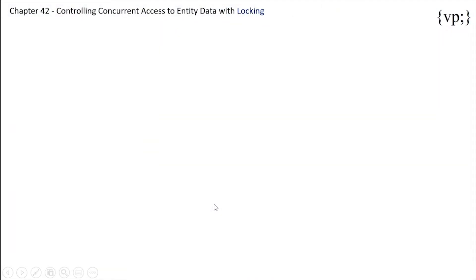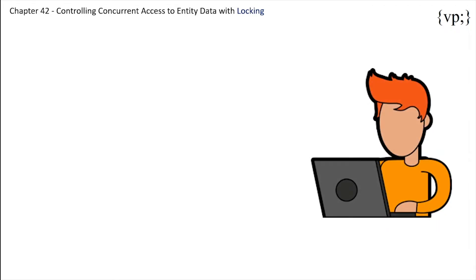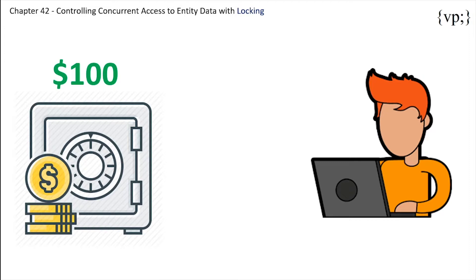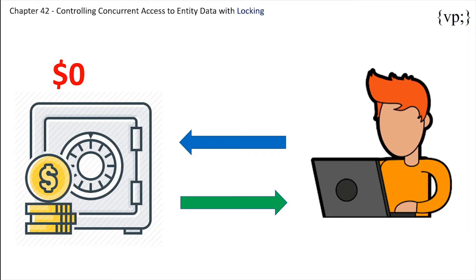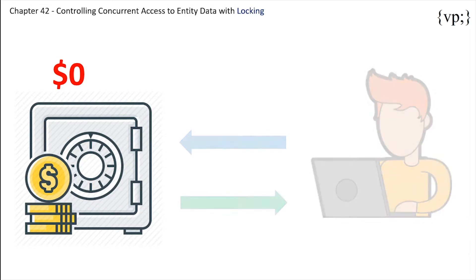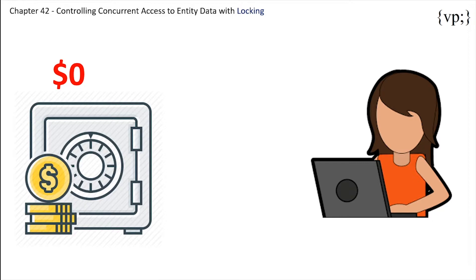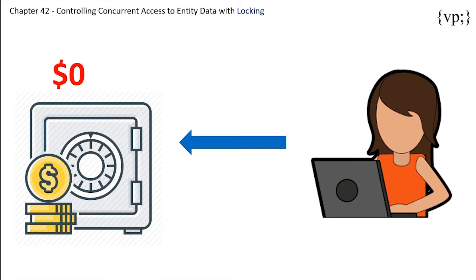Let me describe a situation. Jerry wants to access his family savings account and withdraw $100. There's only $100 in the savings account, and after Jerry is finished there is no money left. Now imagine Jackie, Jerry's wife, wants to withdraw money from the savings account at the same time. The problem is that on both screens it shows $100 in the savings account on both Jackie's and Jerry's website, but Jackie does not know that Jerry had requested the money right before she had.